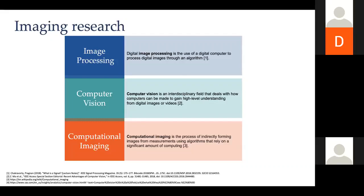Computer vision takes that image and extracts information — objects in the scene, segmentation, and so on. A lot of this has been used in autonomous driving and has permeated many fields, which is why the definition now calls it an interdisciplinary field. Though the theory emerged from electrical engineering and computer science, it has evolved into a tool. We'll discuss how important deep learning is and whether it's enough for research.